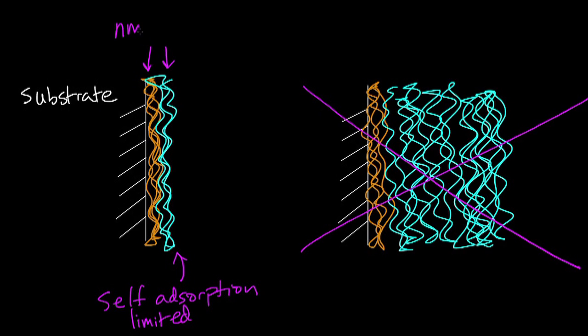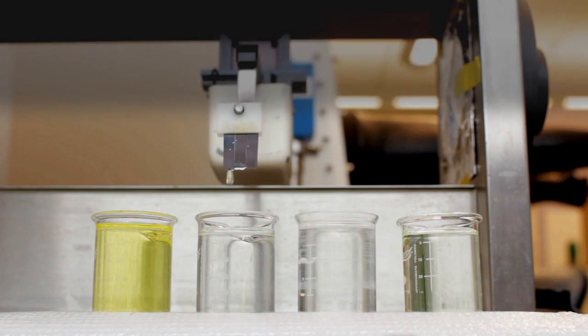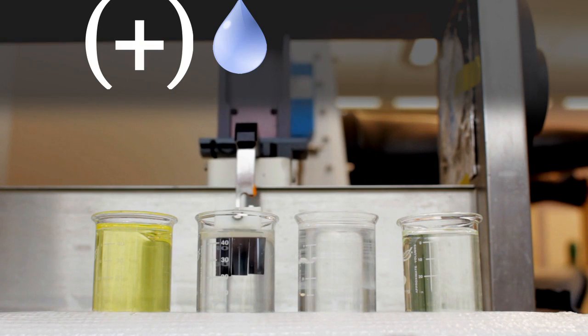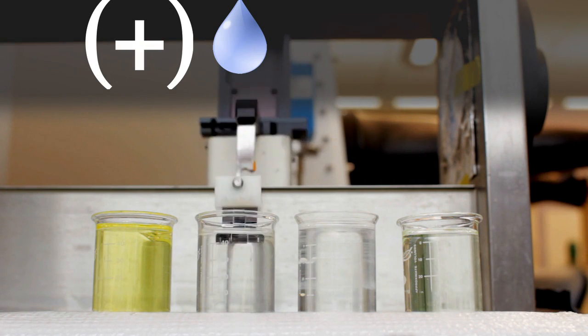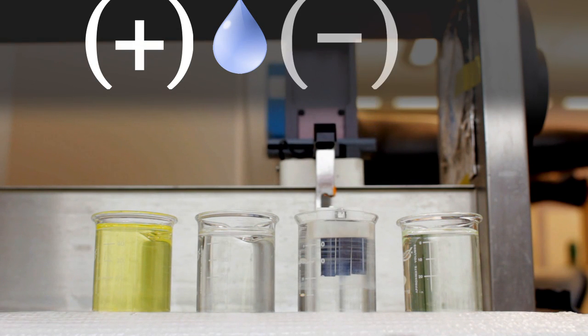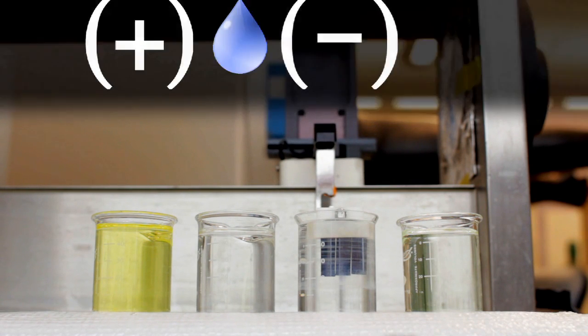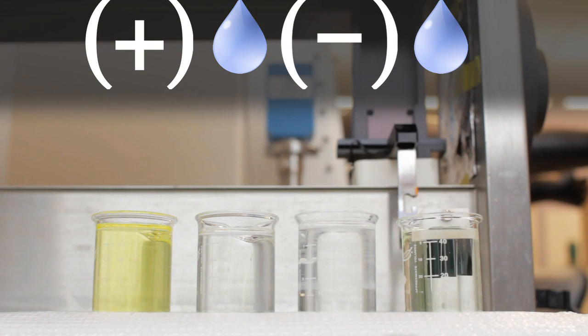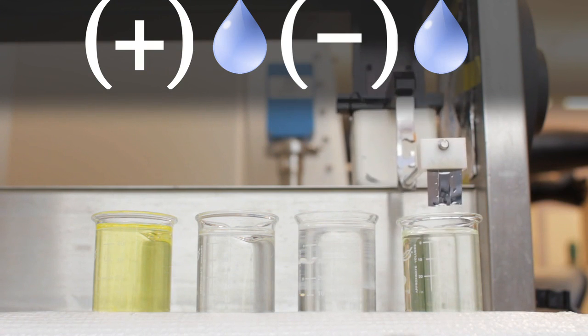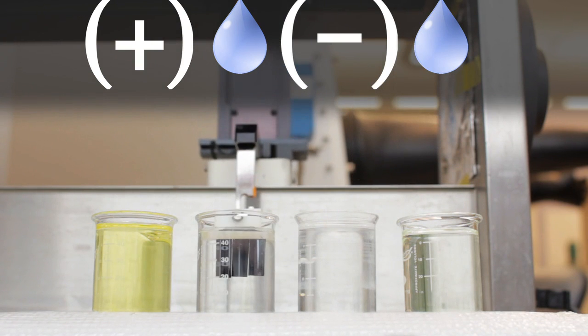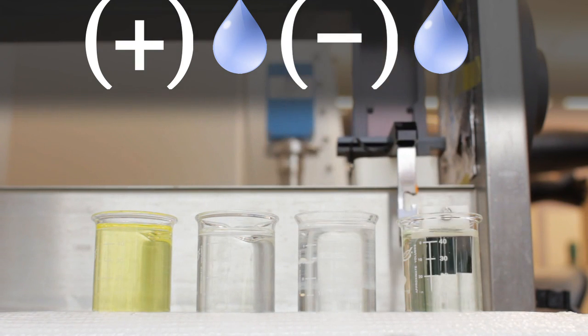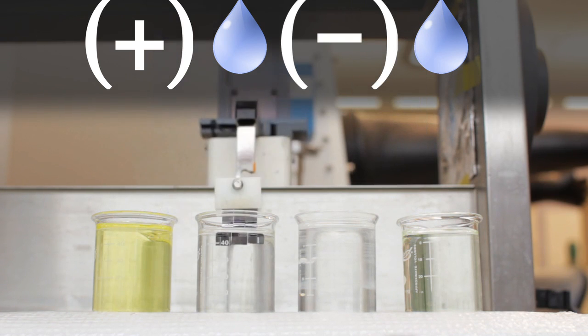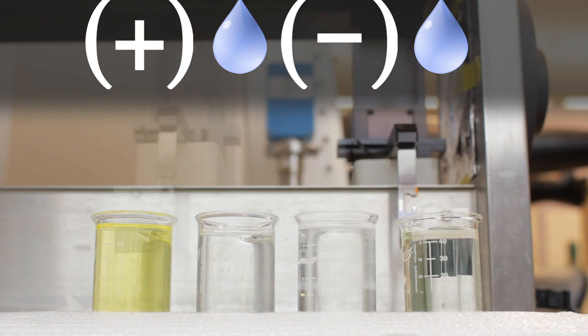This creates layers that are on the order of nanometers thick. After a rinse step to remove any unbound components, the substrate is dipped into a solution of negatively charged molecules. Interaction with the charges on the previous layer allow a new layer to be deposited. Again, we would rinse to remove any unbound components. We can continue this process and dip our growing film into solutions of positively and negatively charged molecules, with rinse steps in between, building up our coating layer by layer.